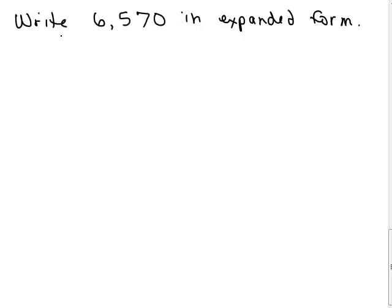Here's one for you to try: write 6,570 in expanded form. So what's that going to be? 6 is in the thousands place, so we have 6,000. 5 is in the hundreds place, so that's 500. 7 is in the tens place — seven tens is 70. We don't have any ones, and notice you don't have to write plus zero. So the expanded form of 6,570 is 6,000 plus 500 plus 70.